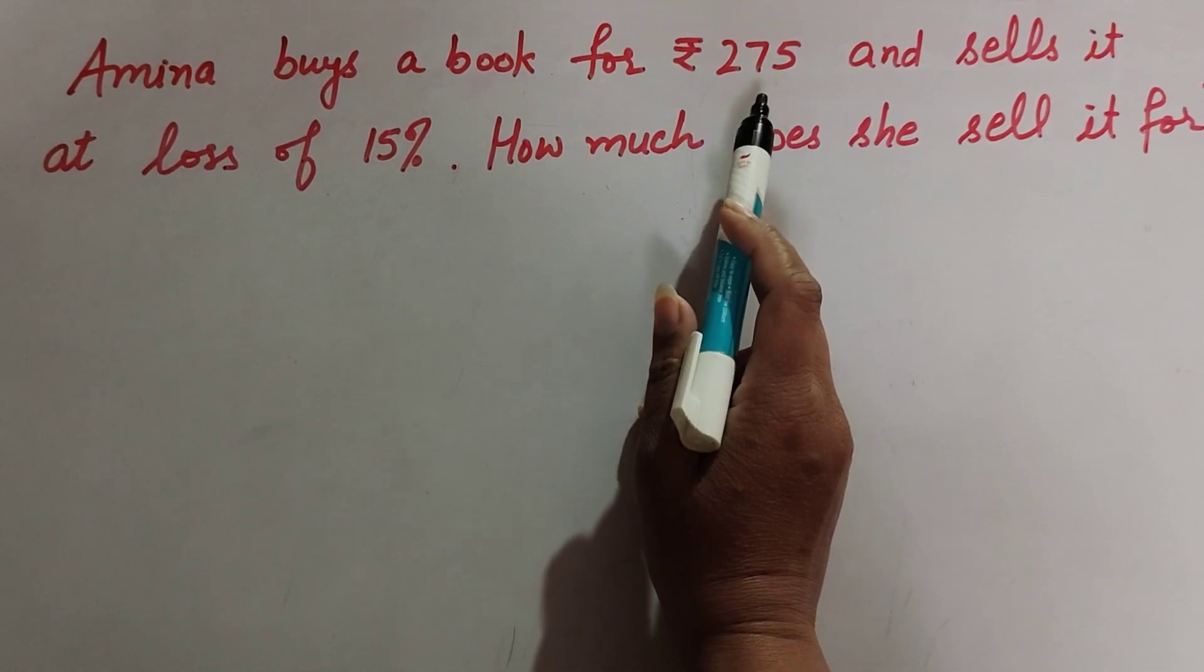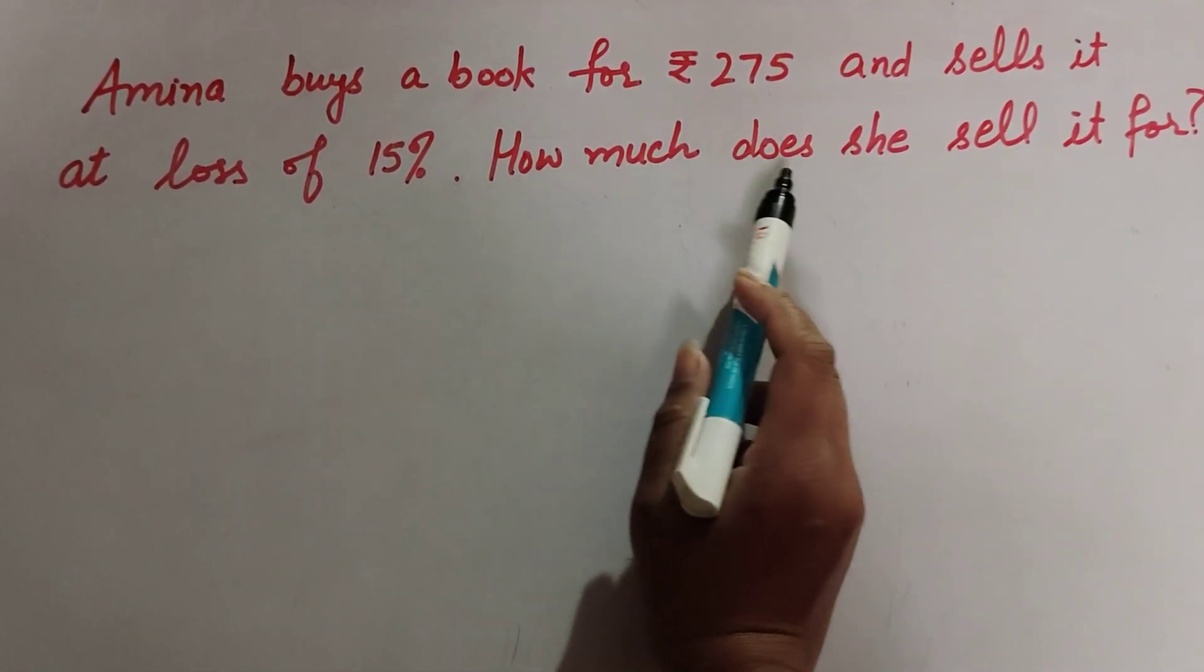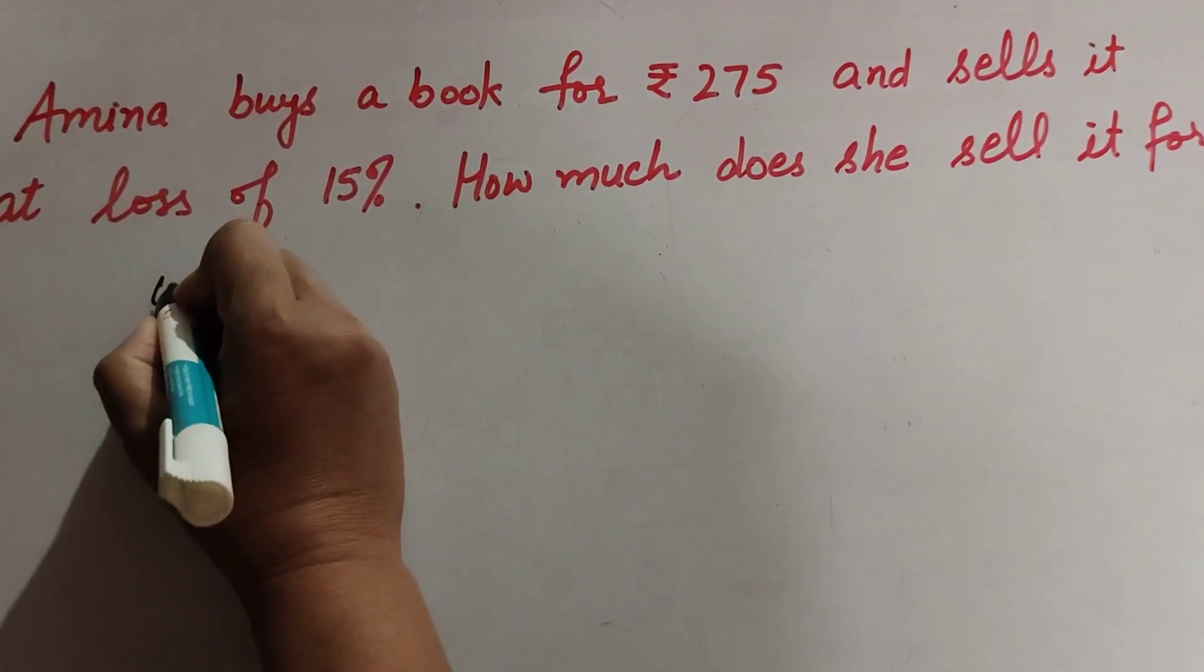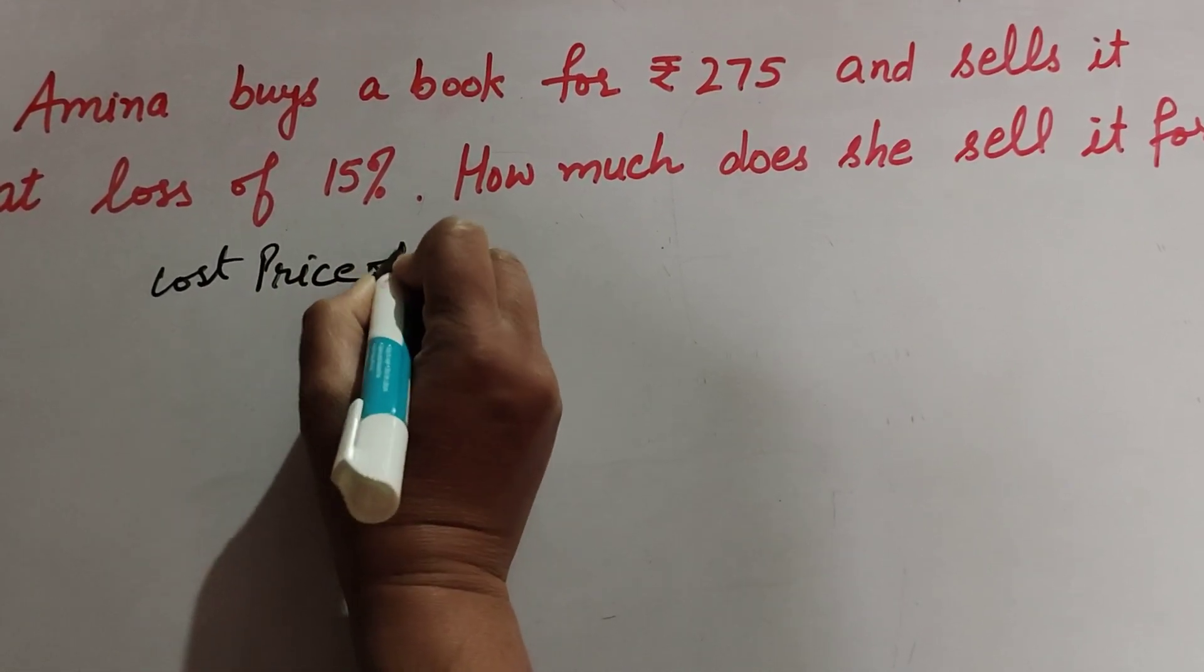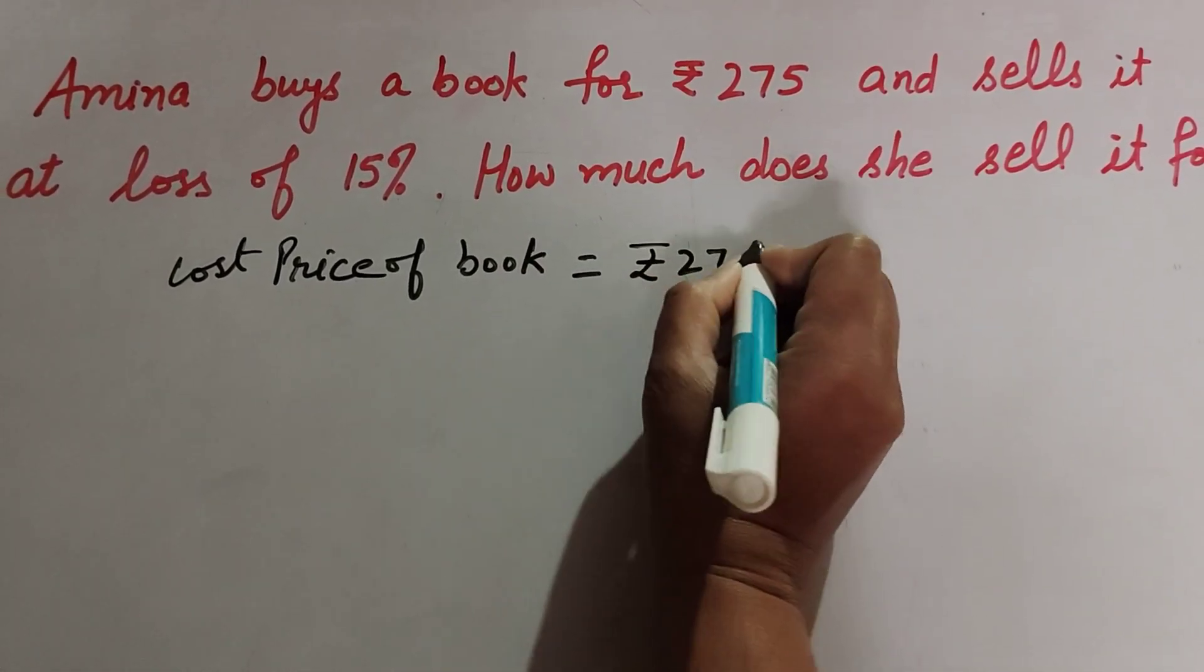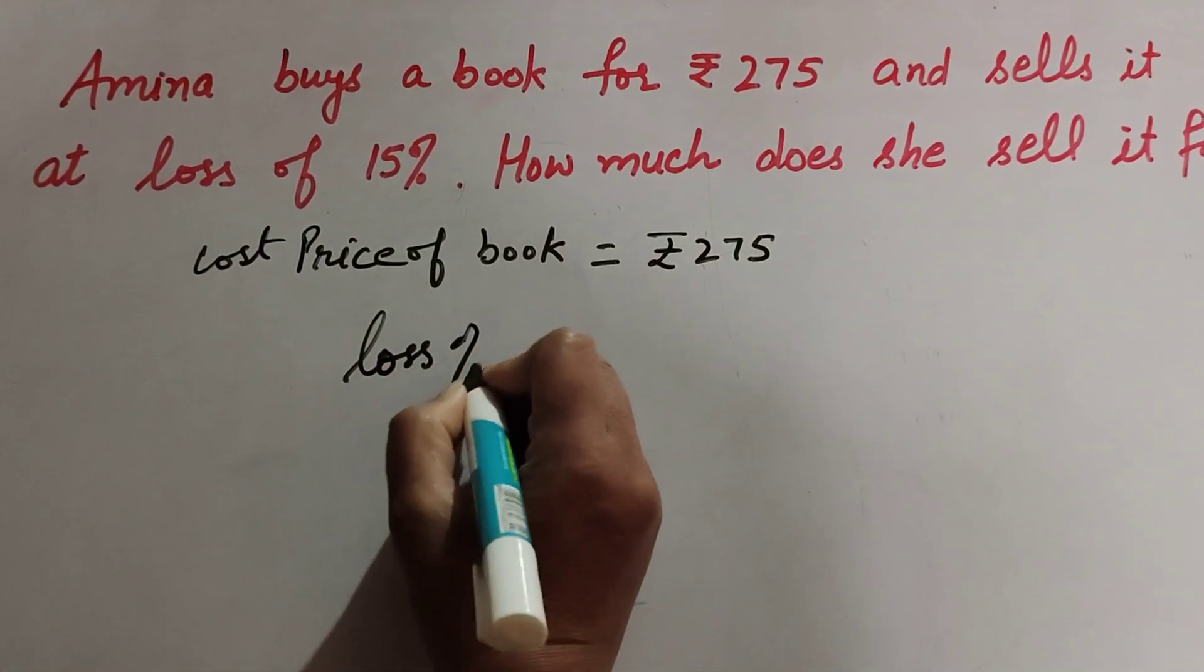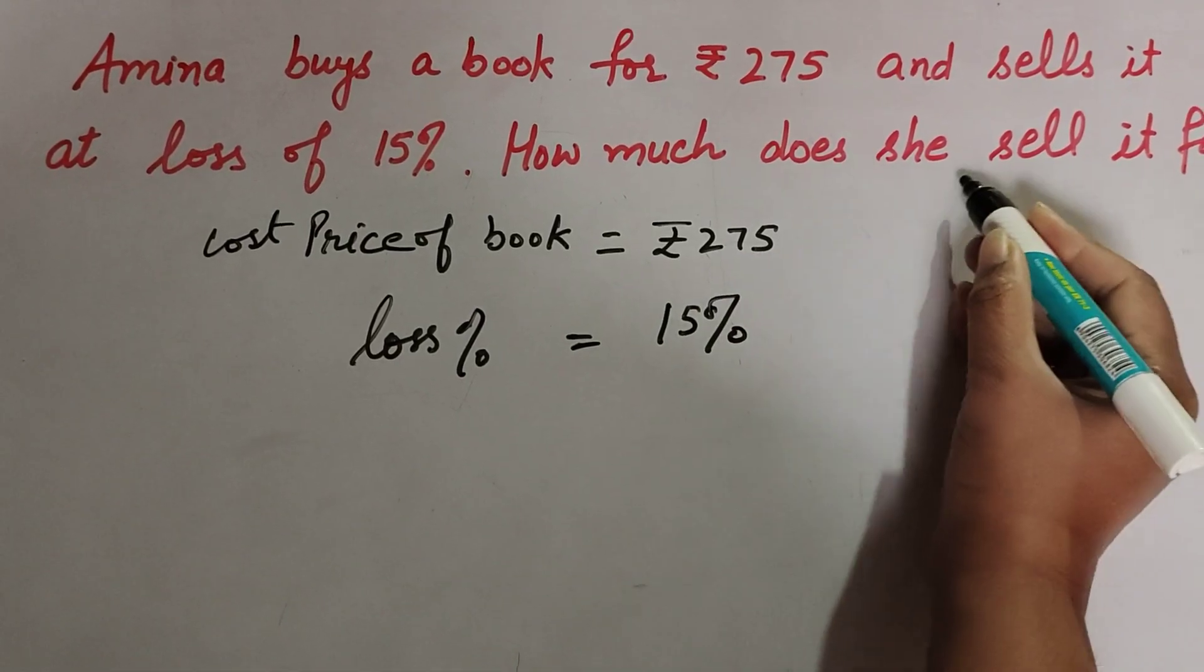We need to find the selling price of the book. The cost price of the book is given as rupees 275, and the loss percentage is given as 15%.